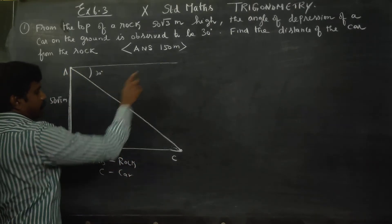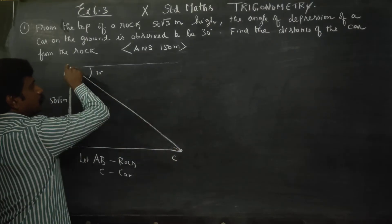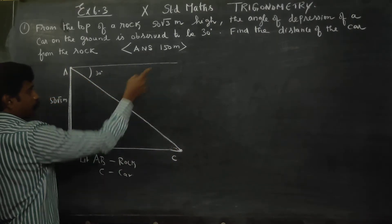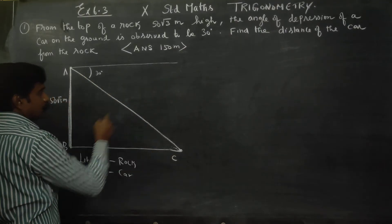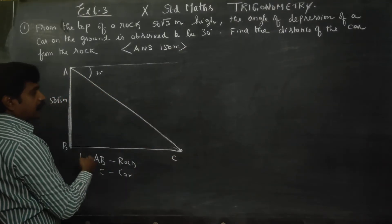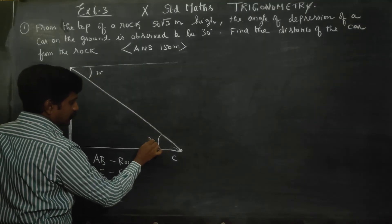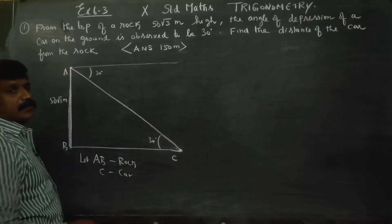This is parallel lines, ground and eyesight are parallel lines. This is Z alternate angles. Alternate angles are always equal when there's a transversal. That's why it's 30 degrees. Angle of depression is the same.